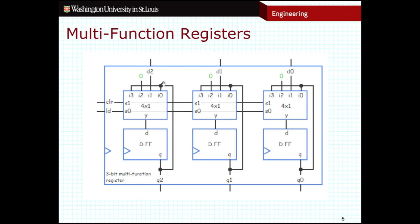This means the register has a few possible options: it can maintain its previous value controlled by the load signal, it can be cleared to zero, or it can read in new data input values. The key takeaway is that I can assign whatever operations I want to the inputs of this mux — maybe an inverter, or addition, subtraction, or multiplication. I just add additional inputs using larger muxes if needed, and the registers will have multiple output signals to control the select bits, enabling multiple operations besides just reading and writing. That about wraps it up for our section on registers. The final video for this course is going to be about addition and logic units.